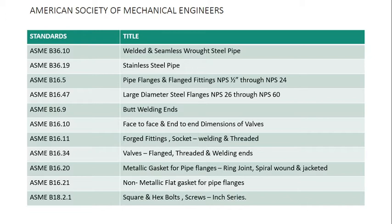B16.9 covers butt welding ends. B16.10 covers face-to-face and end-to-end dimensions of valves. B16.11 covers forged fittings, socket weld and threaded. B16.34 covers valves — flanged, threaded, and welding ends. B16.20 covers metallic gaskets for pipe flanges. B16.21 covers non-metallic gaskets. B18.21 covers square and hexagon bolts.